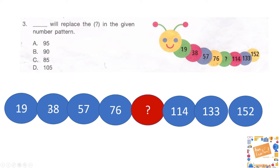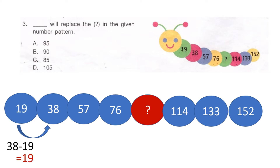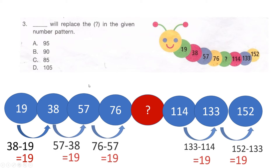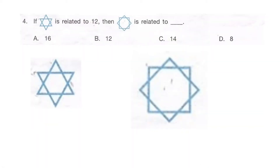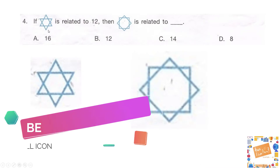To identify the pattern, we find the difference between consecutive blocks. 38 minus 19 gives 19, and if you notice all the remaining blocks also have a difference of 19. That means each block jumps by 19. So coming to 76, the next block should be 76 plus 19, which is 95. And 95 plus 19 is 114, confirming the pattern. So our correct answer is option A — 95.